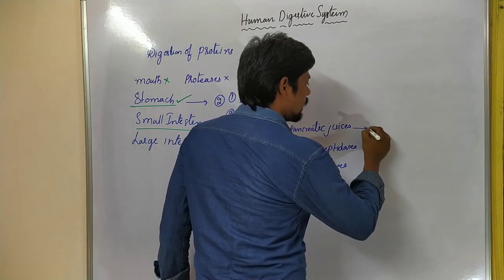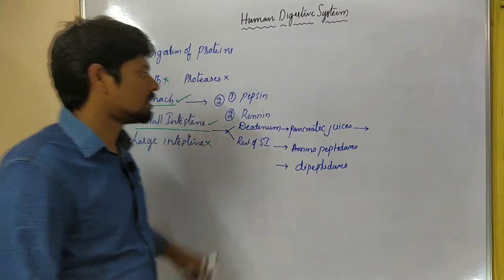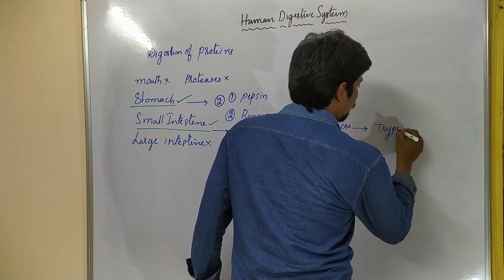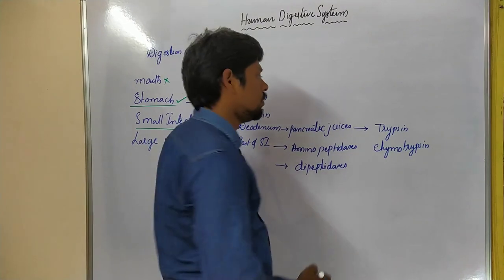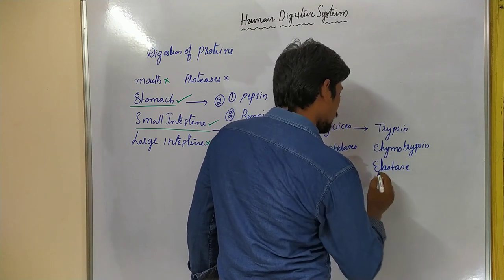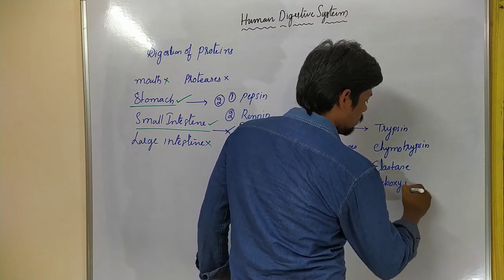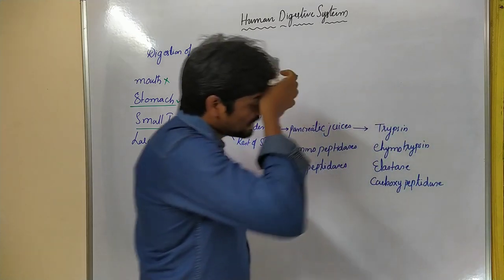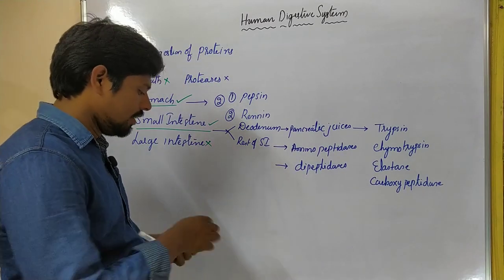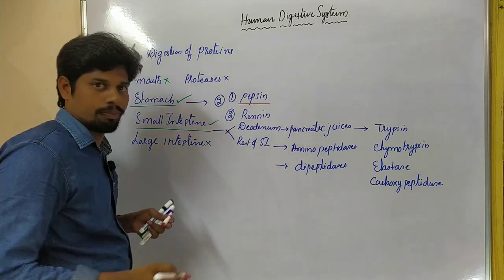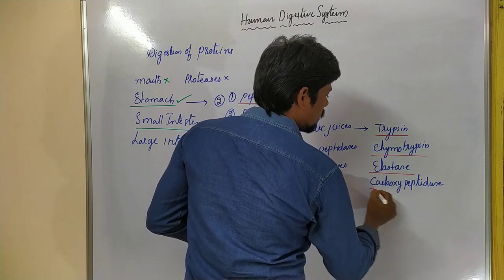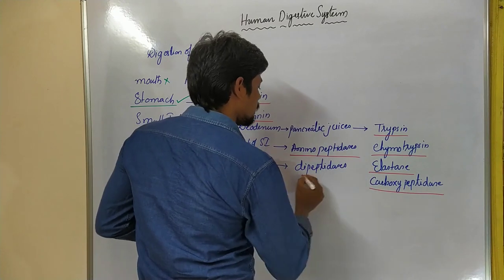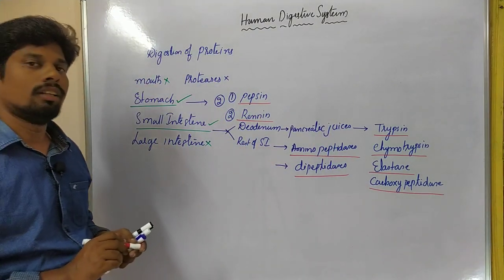The pancreatic juices contain enzymes which act on proteins. These pancreatic juices especially contain trypsin, chymotrypsin, elastase, and carboxypeptidase. These are the enzymes. Pepsin is the enzyme which is essential for the digestion of protein, along with rennin, trypsin, chymotrypsin, elastase, carboxypeptidase, and also aminopeptidases and dipeptidases. So let us start with the enzyme pepsin.